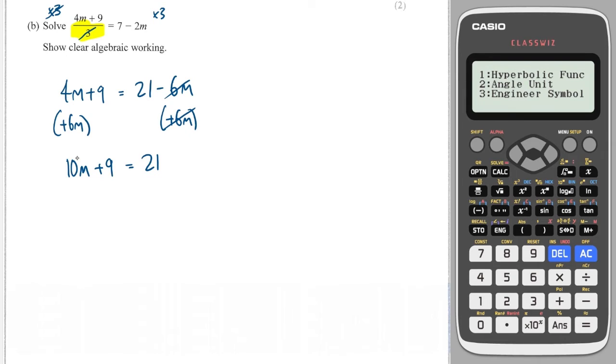Next step will be to isolate the m. So I need to remove this plus 9. I'll do that by minusing 9 to both sides. This gives me 10m is equal to 21 minus 9 is 12, and then I'll divide through by 10, and that will give me 1.2.